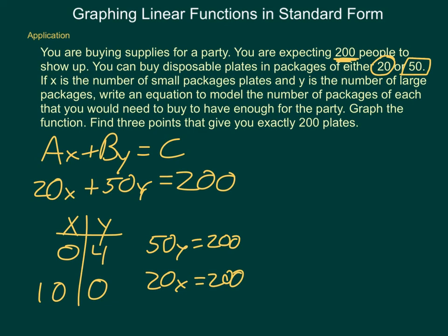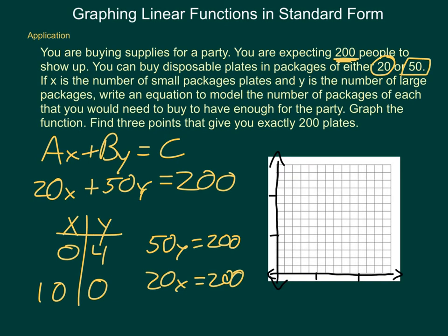So now I can pull up a graphing grid and set up my axes for it. Then go through and plot my point or my points. I have the point 0, 4 right about here. And I have 10, 0 right here.